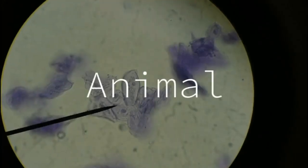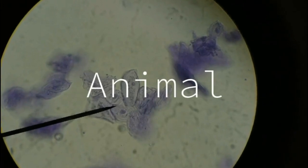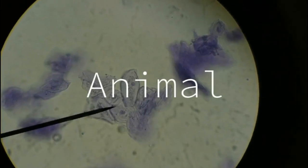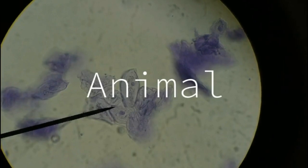Animal cells are very different. Here you see skin cells. See how squishy the outside is? No cell wall here.